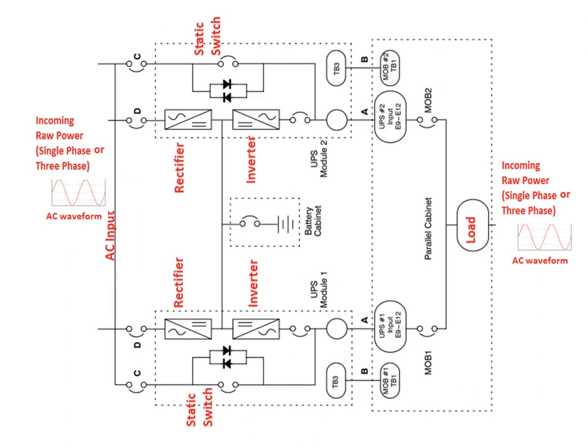A similar system can be configured with a common battery bank shared by two redundant UPS systems. Each system has a static switch, rectifier, and inverter, and the UPS used in this redundant configuration is a double conversion online UPS connected in parallel combination. Thank you for watching.